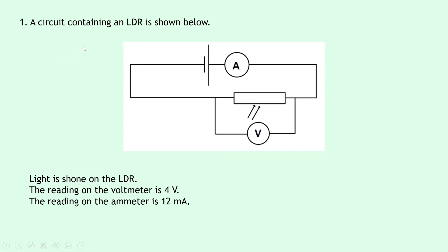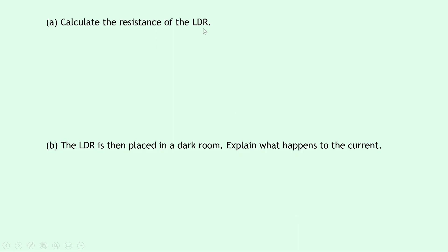Now we'll do the example for LDRs, which stands for light dependent resistor. Question 1 says a circuit containing an LDR is shown below. We've got a battery with an ammeter next to it, and then an LDR with a voltmeter across it. Light is shone on the LDR. The reading on the voltmeter is 4 volts and the reading on the ammeter is 12 milliamps, meaning the voltage across the LDR is 4 volts. Part A says to calculate the resistance of the LDR.